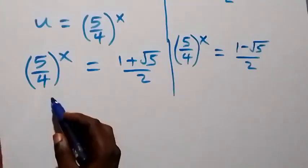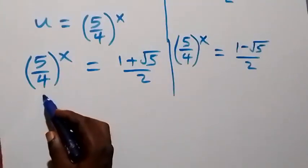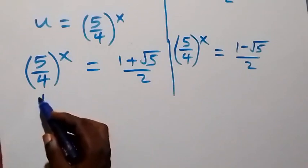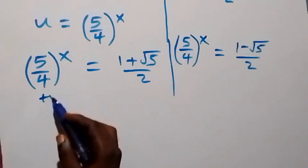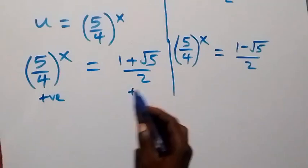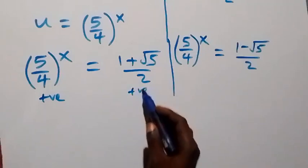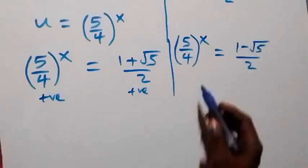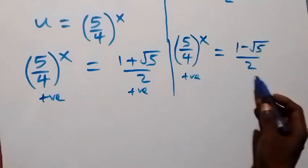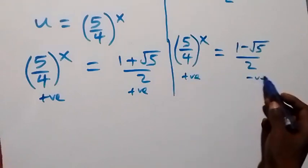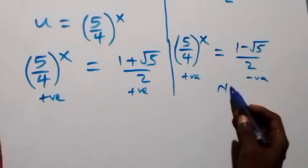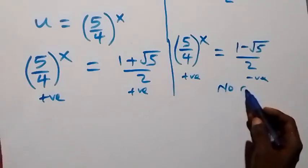Now, (5/4) raised to power x is always a positive number. The first solution (1 + √5)/2 is positive, but (1 − √5)/2 is negative. So there is no solution from the second case — we discard it.